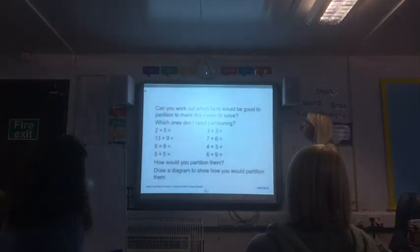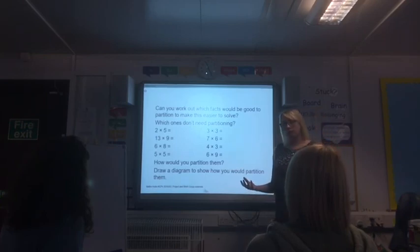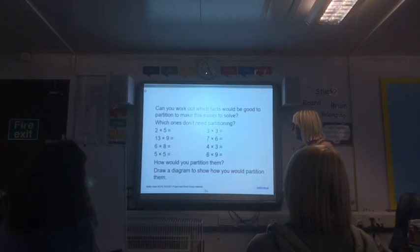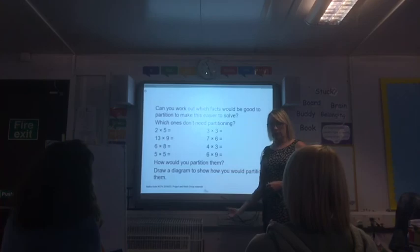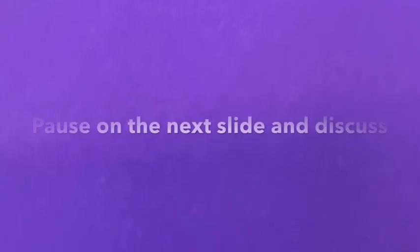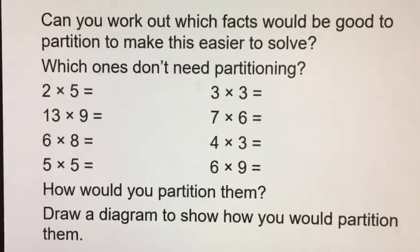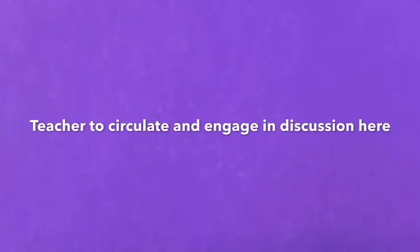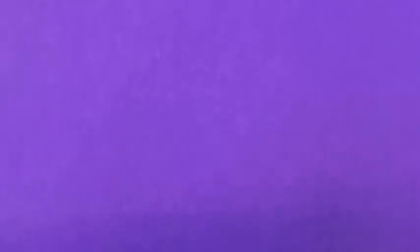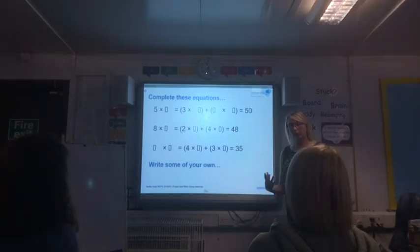Can you work out which facts would be good to partition to make them easier to solve, and which ones wouldn't you partition and why? Talk to your partner about each calculation — would you partition them or not? You and your partner might disagree, so talk about it. Could you draw a diagram to show how you would partition the ones you choose? Now I would like you to complete these equations by yourself — if you get stuck you can talk to a friend. And if you manage to complete these, can you write some of your own?